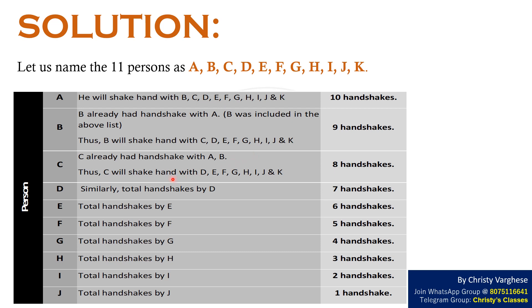Person C already shook hands with A and B. Thus, C will shake hand with D, E, F, G, H, I, J and K. That is 8 handshakes.